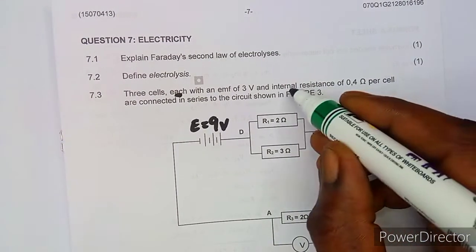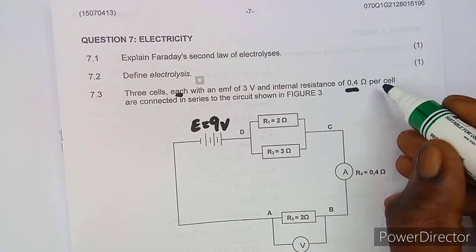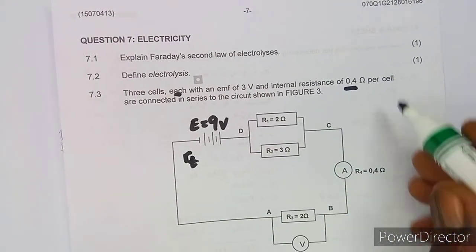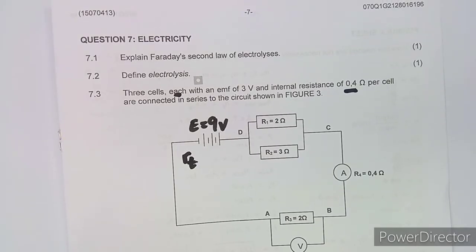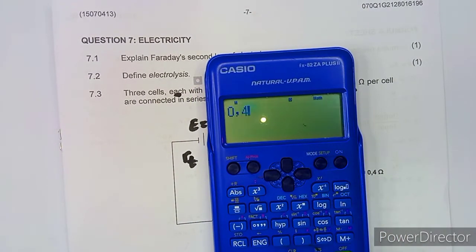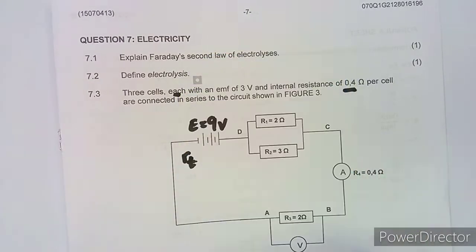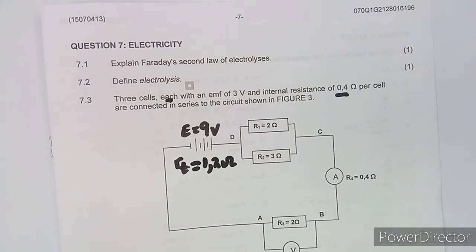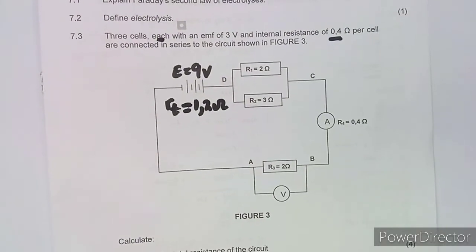The internal resistance is 0.4 ohms per cell. Since there are three cells connected in series, we add them: 0.4 × 3 = 1.2 ohms. So the total internal resistance of the source is 1.2 ohms.